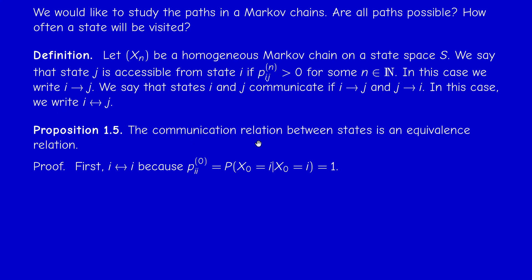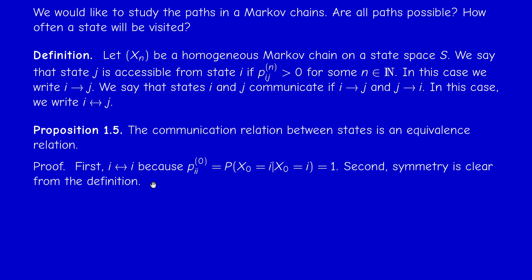The communication relation is an equivalence relation, so this partitions the states of S into equivalence classes called communication classes. Now, why does i communicate with itself? Because the zero-step transition probability — the conditional probability that X equals i given that X equals i — is one. So i communicates with itself. Symmetry is clear: if i communicates with j, then j communicates with i, by definition.